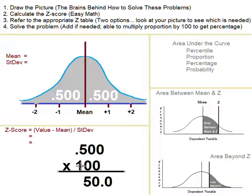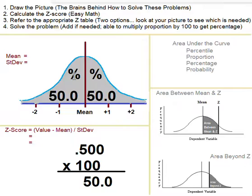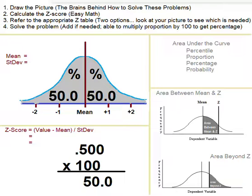0.500 times 100 gets you 50.0. And 50% plus 50% is 100%. To go between proportions and percentages, we take our proportion, multiply by 100, and we get our percentage. You don't actually have to multiply by 100 with a calculator — you can just move the decimal point over two spots.